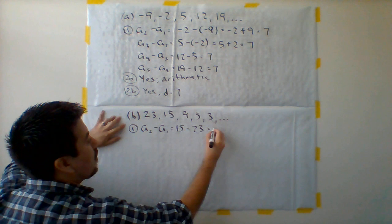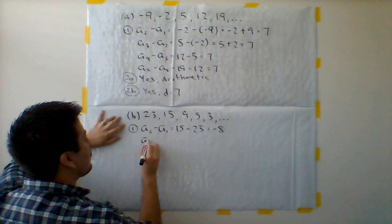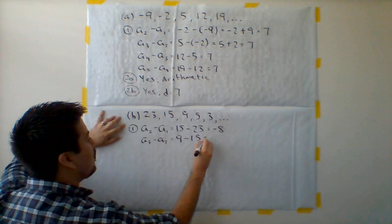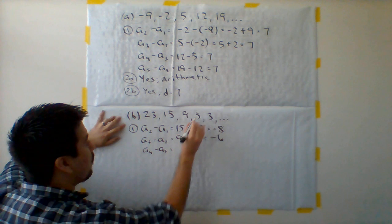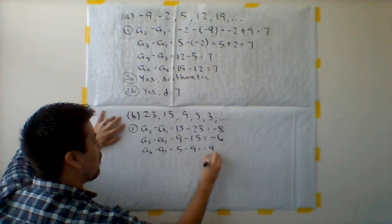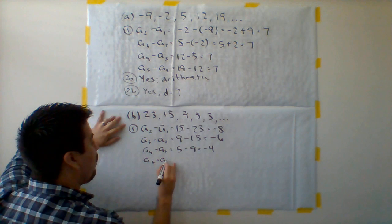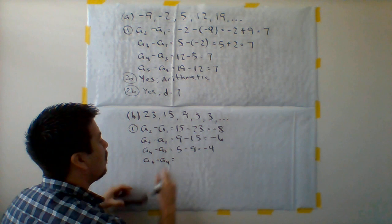Okay, let's do the third term minus the second term. So A3 minus A2, 9 minus 15, we get negative 6. I'm going to try the fourth term minus the third term. A4 minus A3, so 5 minus the number 9, I get negative 4. And then the fifth term minus the fourth term gets us 3 minus 5, which we get as negative 2.